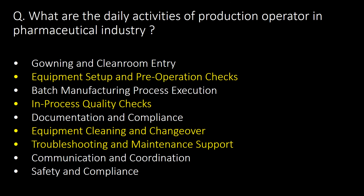What are the daily activities of a production operator in the pharmaceutical industry? The daily activities include governing and clean room entry, equipment setup and pre-operation checks, batch manufacturing process execution, in-process quality checks, documentation and compliance, equipment cleaning and changeover, troubleshooting and maintenance support, communication and coordination, and safety and compliance.